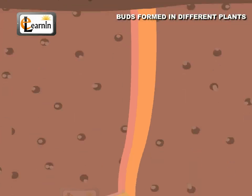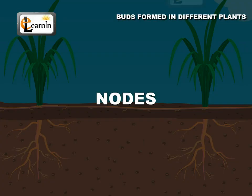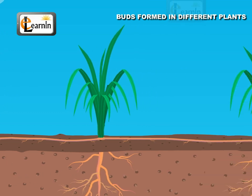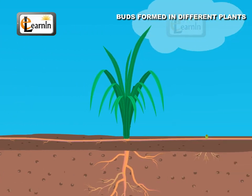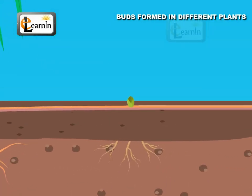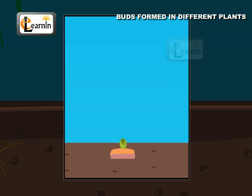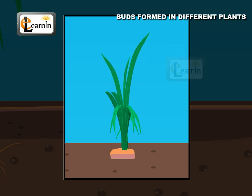Buds can also arise on the roots or leaves. Nodes: Grass plants have a weak stem. The internodes are long and the nodal portions will have roots and axillary buds. When they are cut at internodes, these buds develop into independent new plants.